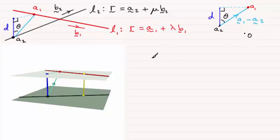Now using basic trigonometry we can work out that distance D, hence the shortest distance between the two lines L1 and L2.